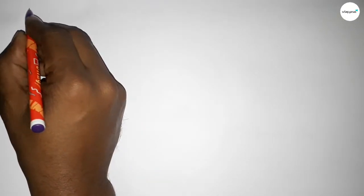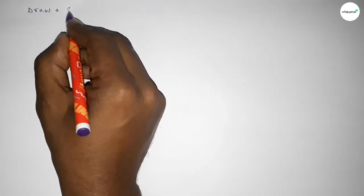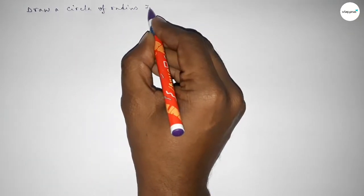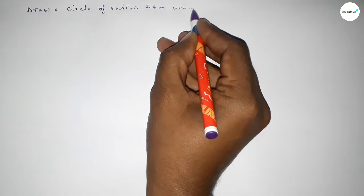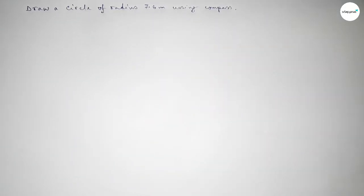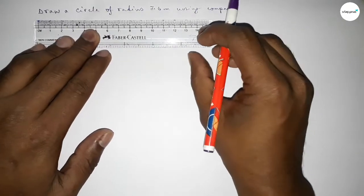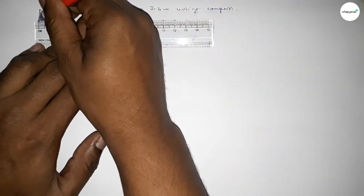Hi everyone, welcome to SSR Classes. Today in this video we have to draw a circle of radius 7.6 centimeter by using compass. So let's start the video. First of all, drawing here the line 7.6, so this is starting.